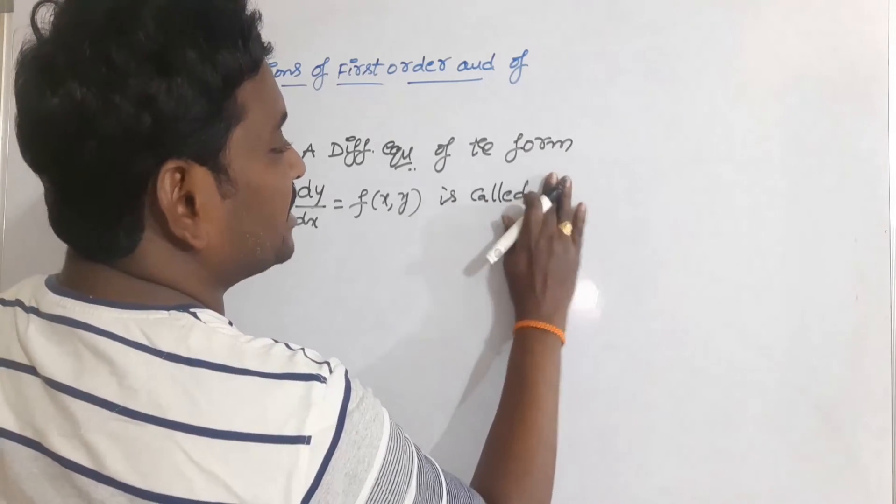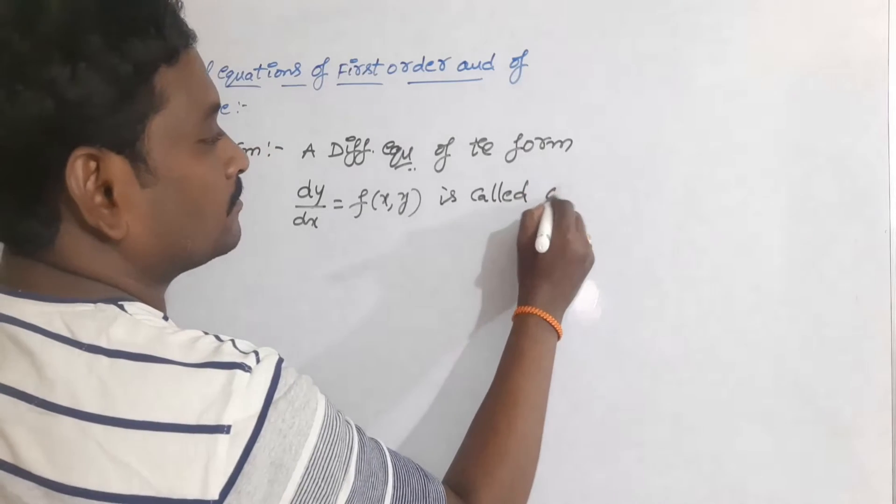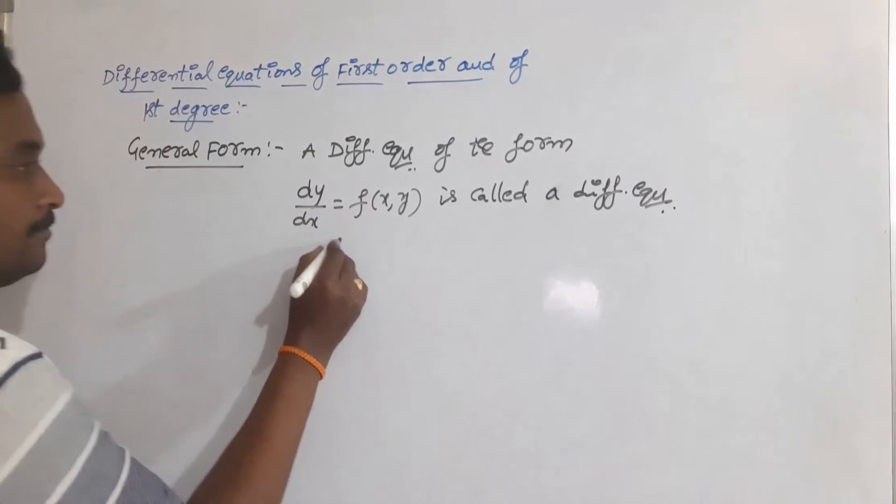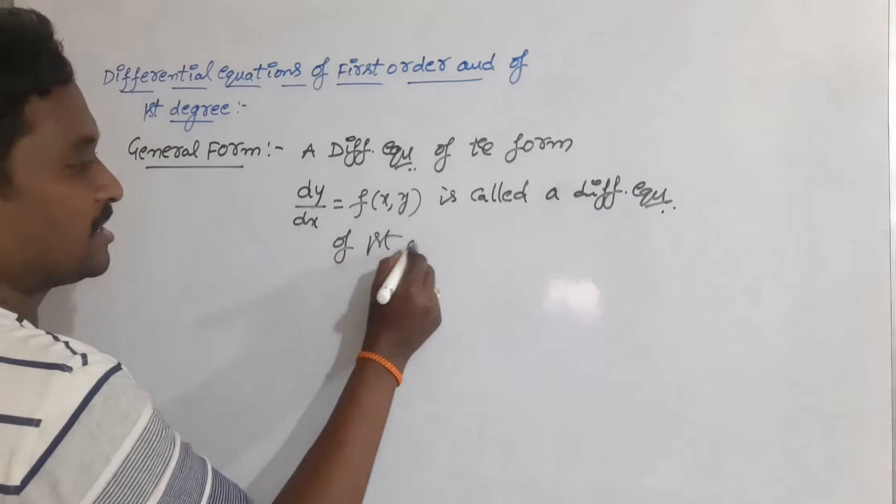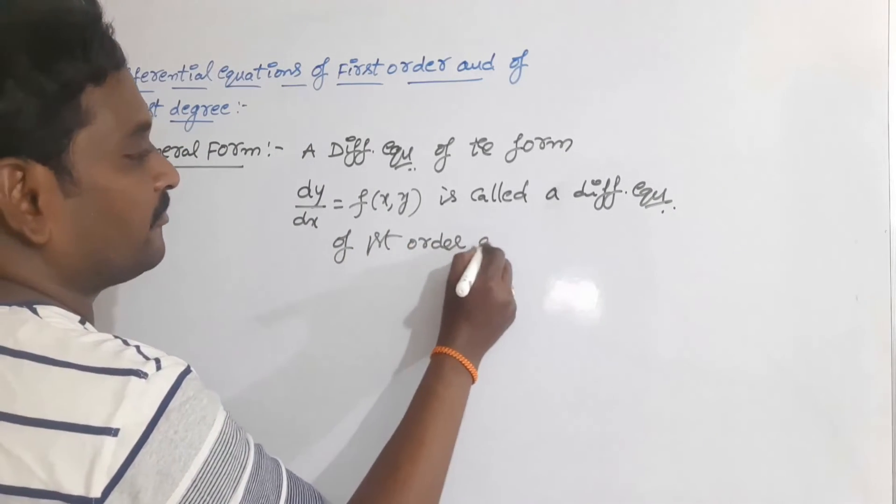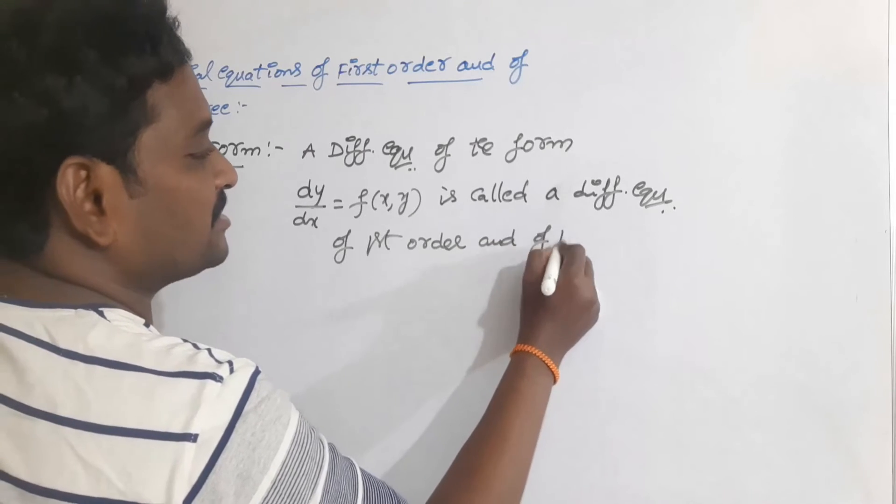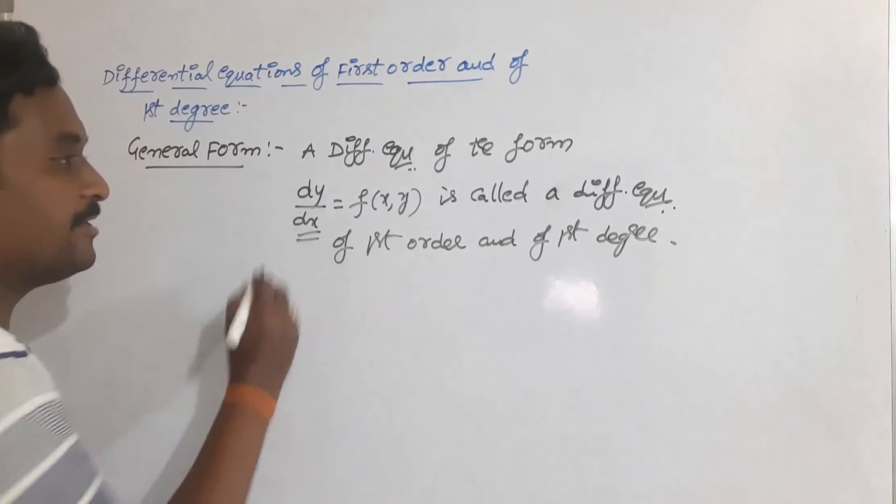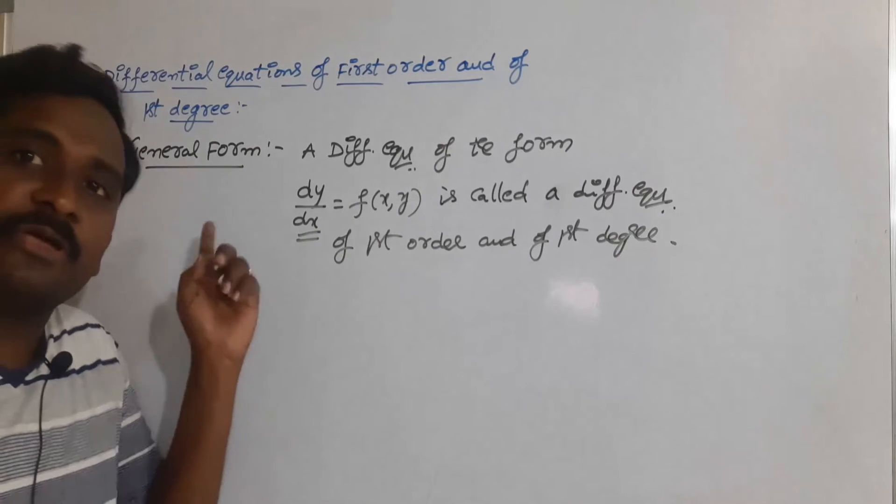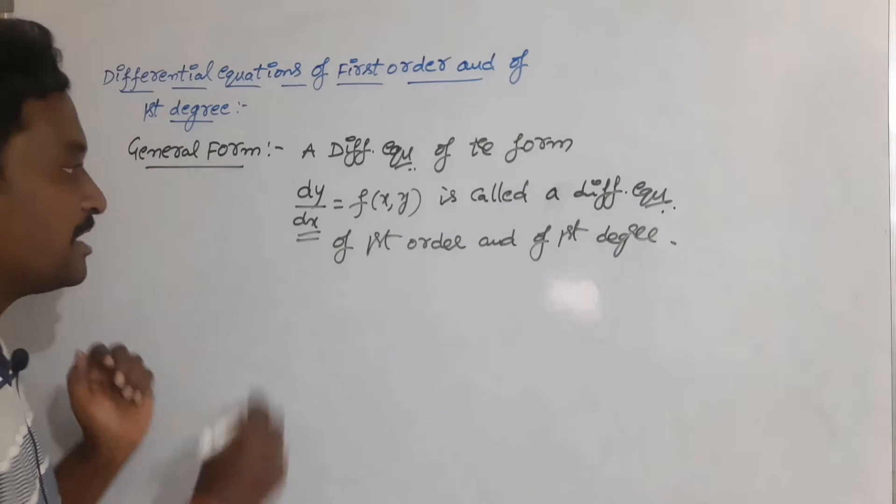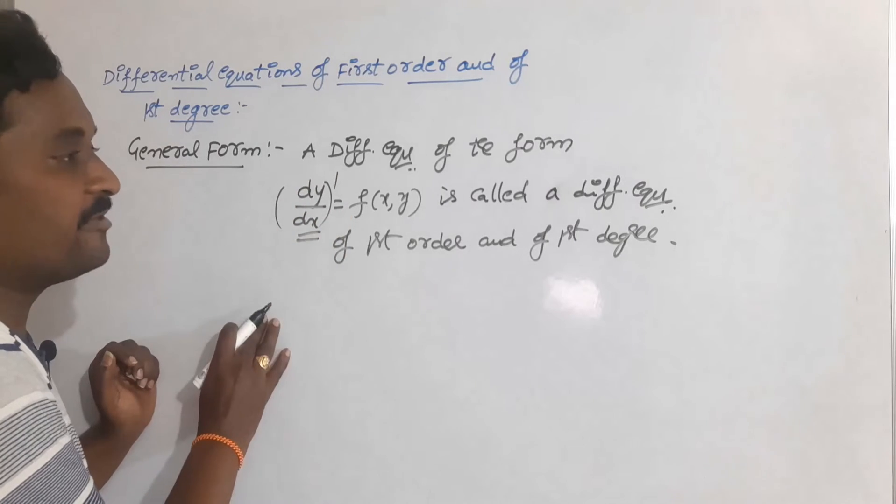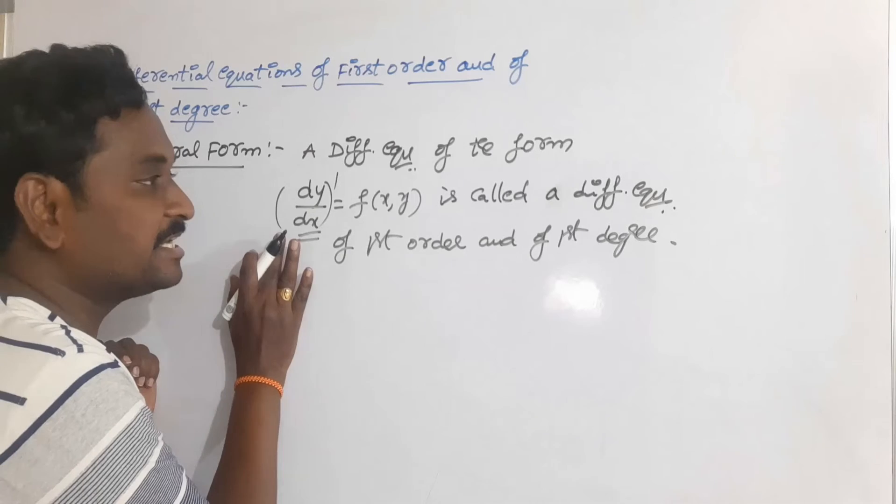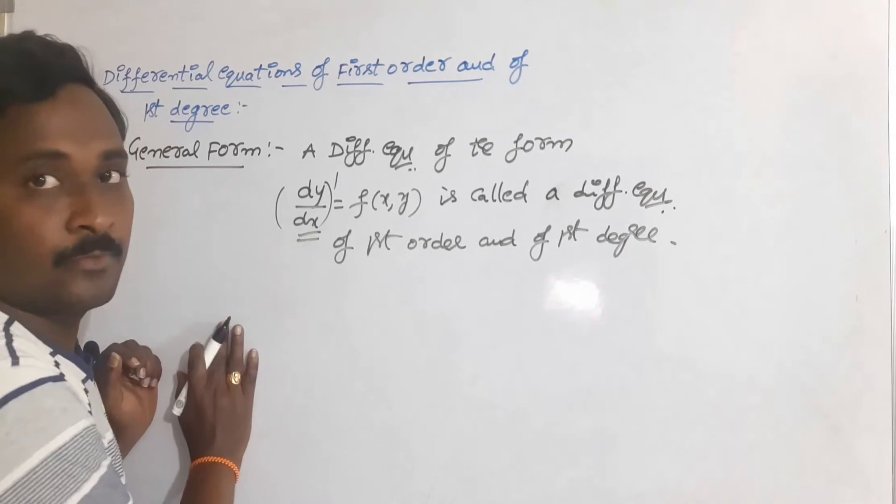A differential equation of first order and of first degree. Because clearly we are observing that the first derivative is the highest derivative involved in this equation, and the power of this highest derivative is also 1. That's why this is first order and of first degree differential equation general form.